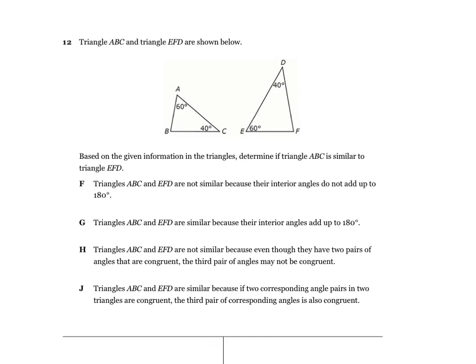Number 12: if these two pairs of angles match between the triangles, then triangle ABC must be similar to triangle EFD. The question asks you to determine if they're similar. Two of the answer choices say not similar — those won't help. Two say similar. Note that choice G says their interior angles add up to 180 degrees, but that's true of all triangles and has nothing to do with similarity. Figure it out from there.